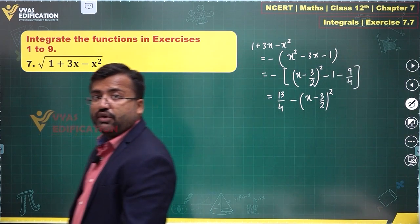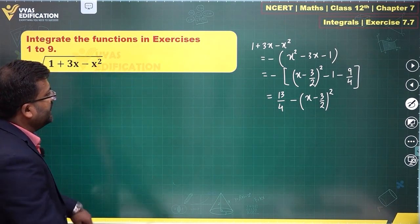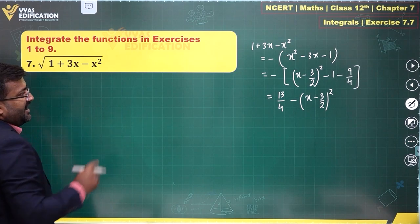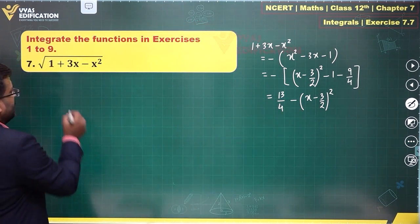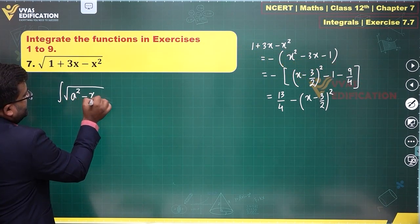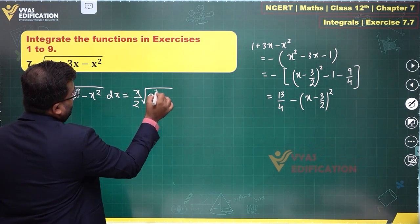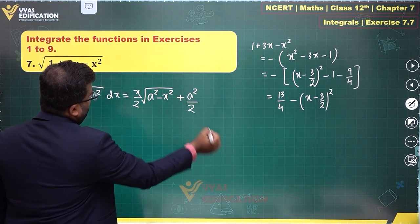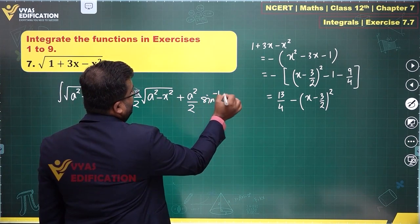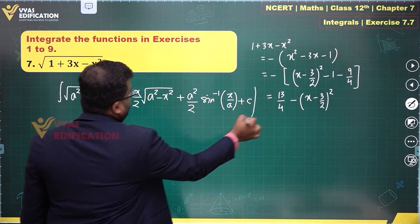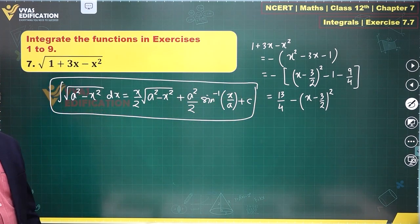So we have converted the expression under the root into a perfect square form. The formula we'll need is ∫√(a² - x²) dx = (x/2)√(a² - x²) + (a²/2) sin⁻¹(x/a) + C. This is the required formula.